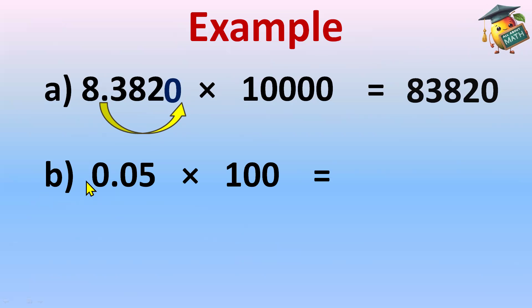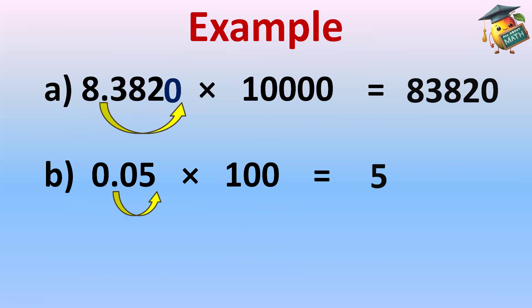Next: 0.05 multiplied by hundred. There are two zeros in hundred, so we shift the decimal right by two digits. The answer is 0005, which means the answer is simply 5.